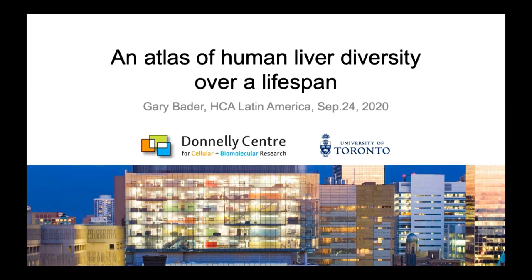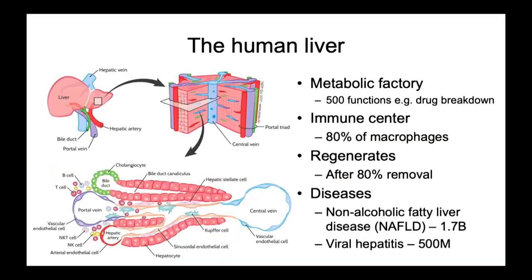Hello everyone. I'd like to thank the organizers for giving me the opportunity to tell you about an atlas of human diversity over a lifespan. The human liver is the largest solid organ in the human body. It has many functions — it's a metabolic factory with over 500 known functions. It's an immune center that contains the majority of the body's macrophages. It has a famous capacity to regenerate; even after 80% of it is removed, it can grow back to its normal volume. And it's affected by important diseases that are increasingly prevalent.